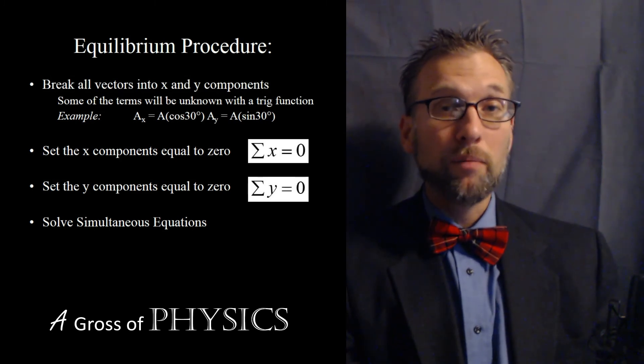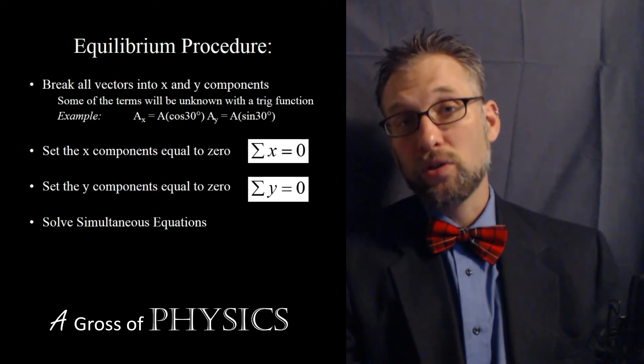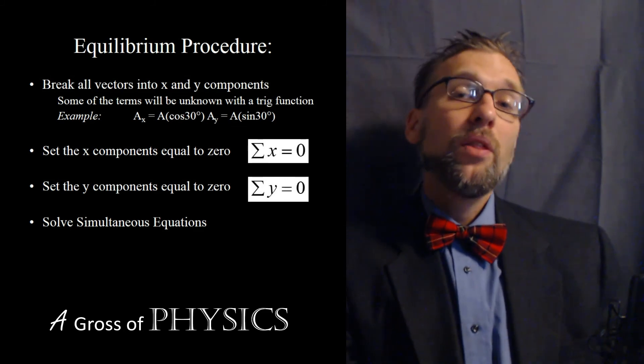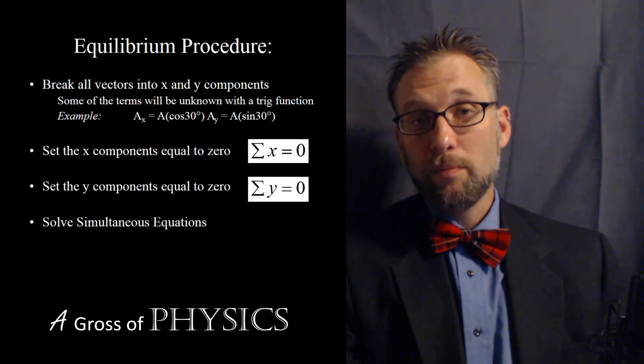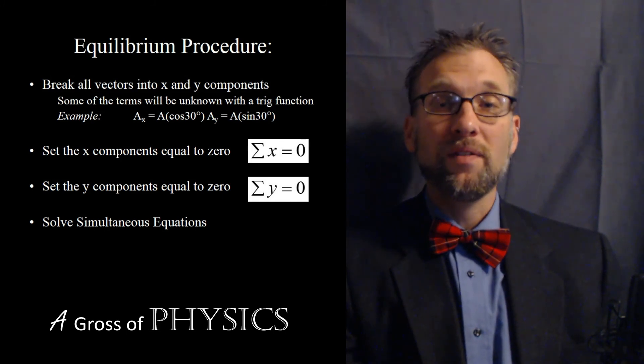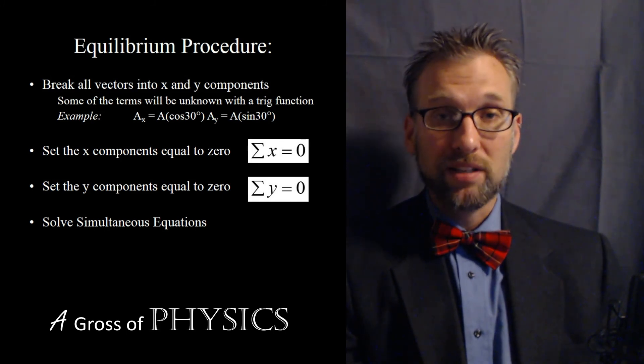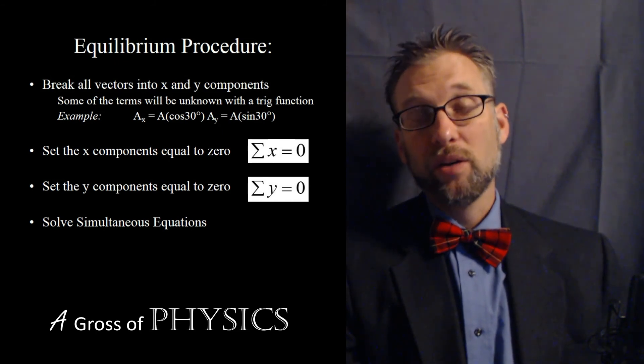So the steps become break your vectors into x and y. If you don't know what the numbers are, use symbols instead. And those symbols will be part cosine and part sine. The other important thing will be to know what the signs are of each of the components. If it's going to the right, it's positive. If it's up, it's positive. If it's to the left, it's negative. If it's down, it's negative.